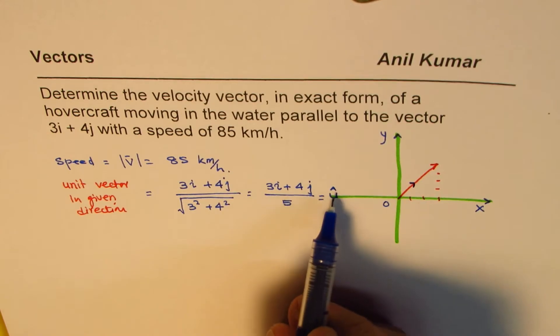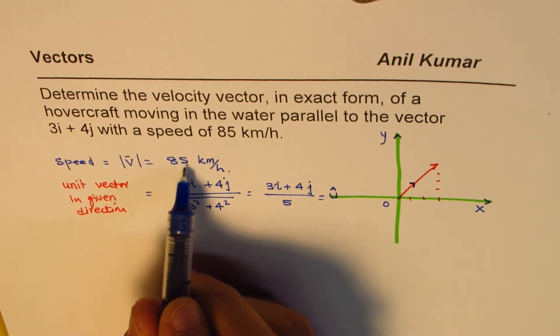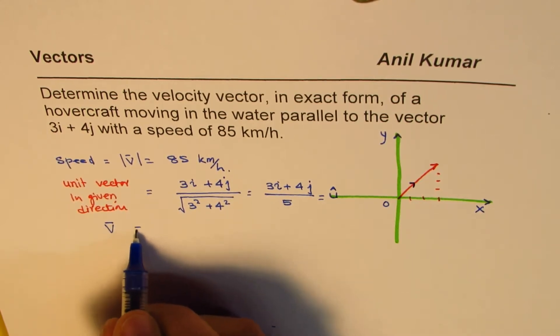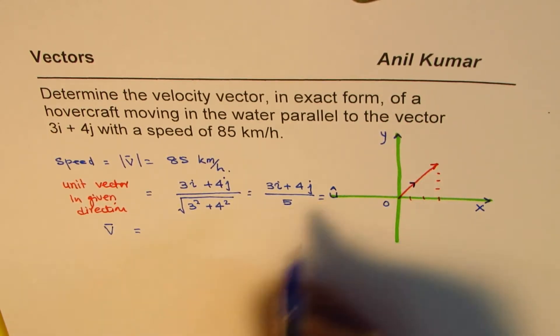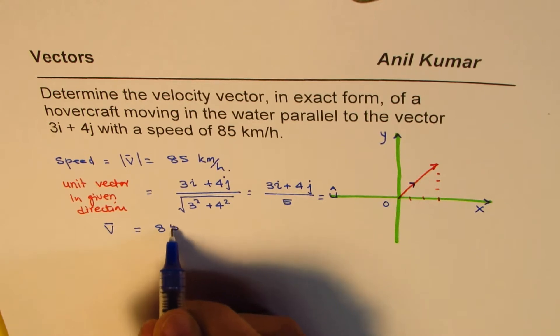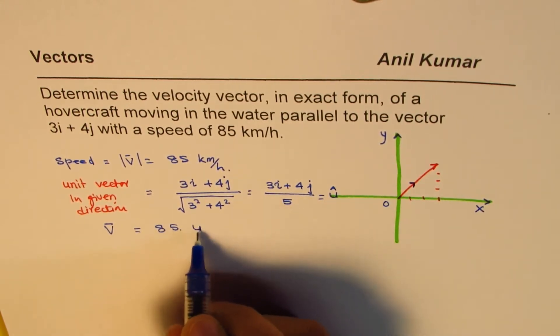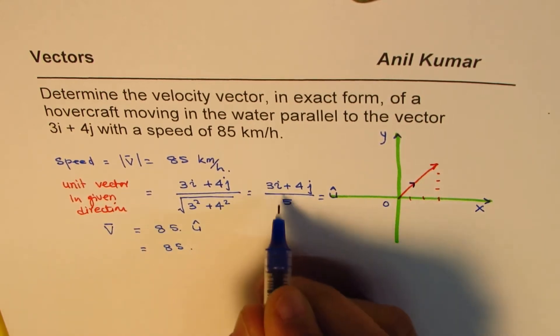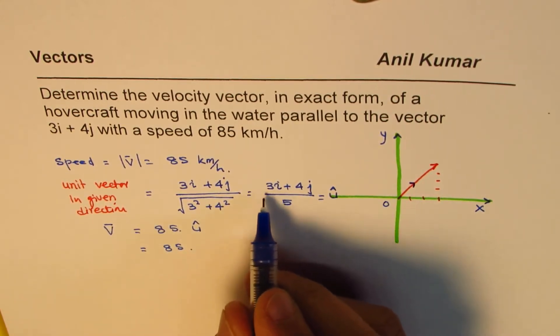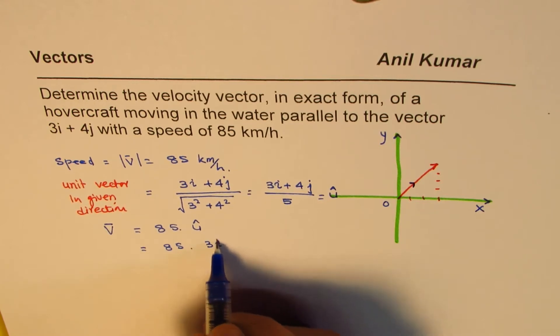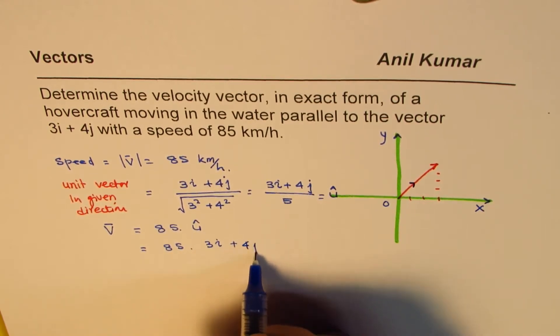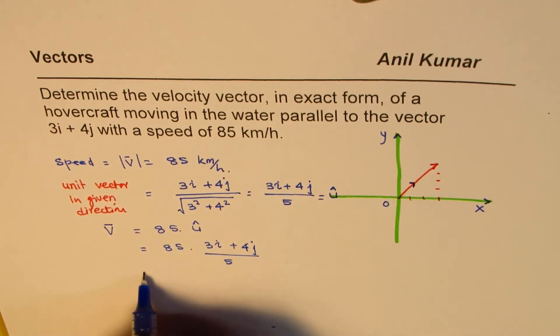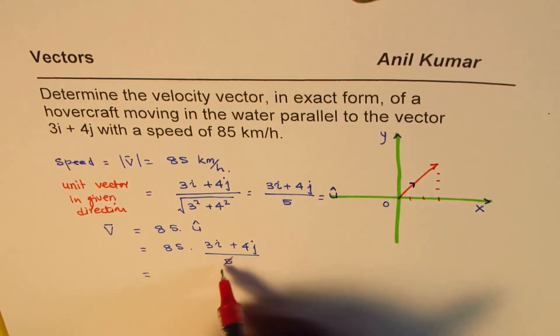Now, in this direction, we need magnitude of 85. And therefore, v, the vector, is scalar multiple of unit vector. It is 85 times this unit vector. So, we could write this as 85 times 3i plus 4j divided by 5. And we can simplify by crossing these out.